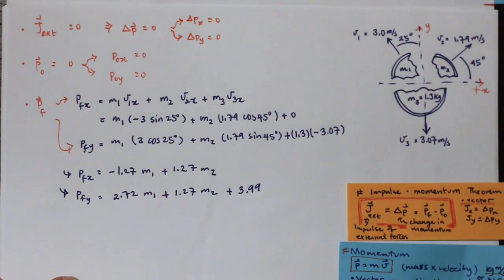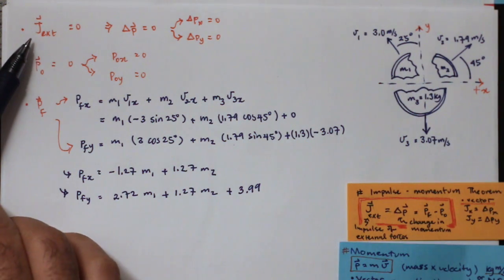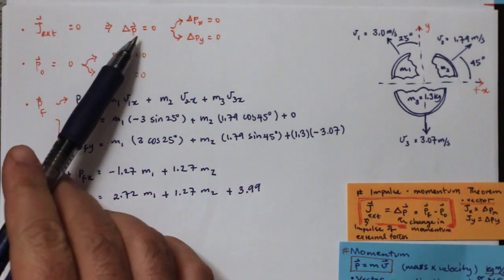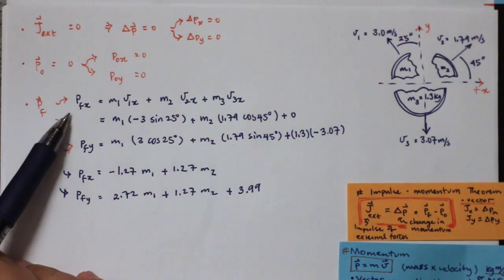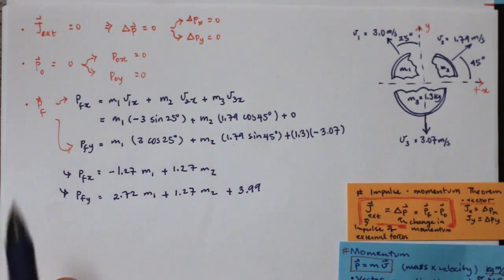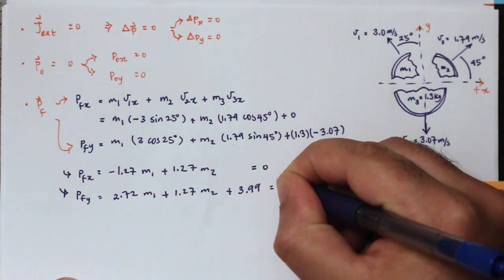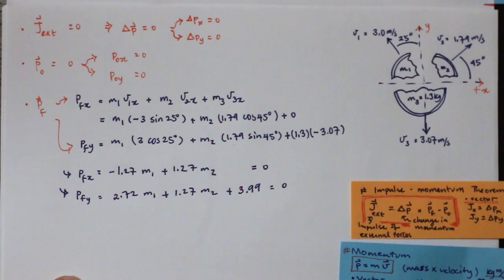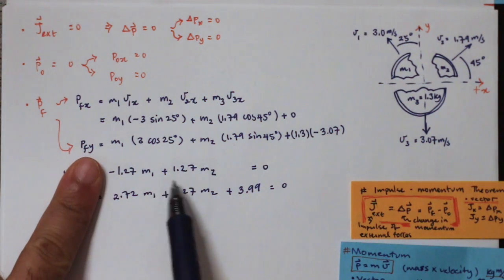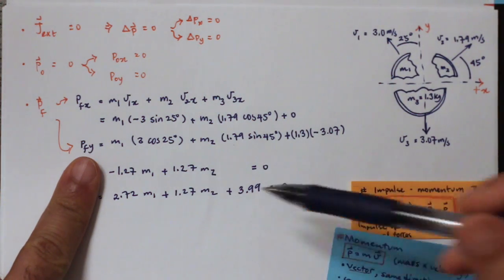Since the impulse of external forces is zero, the change in momentum is zero, meaning the final momentum in X equals the initial momentum in X (zero), and the final momentum in Y equals the initial momentum in Y (zero). So we have two equations in two unknowns, M1 and M2, and the coefficient of M2 is the same in both equations.